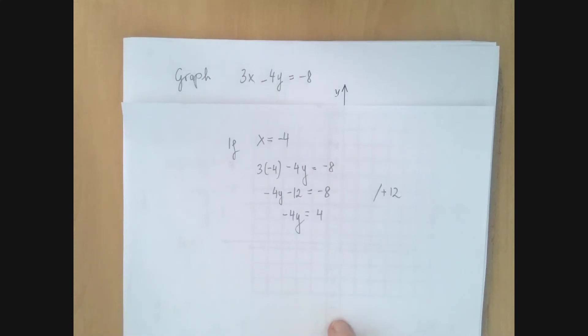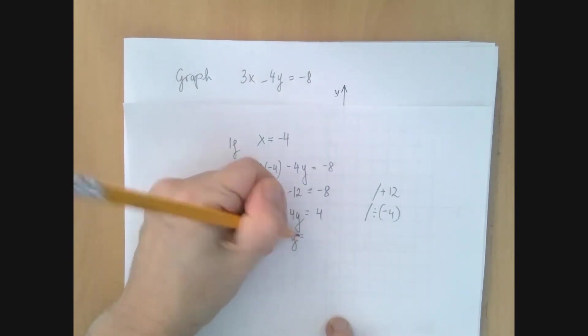And now we're going to divide both sides by negative 4. So y is negative 1.